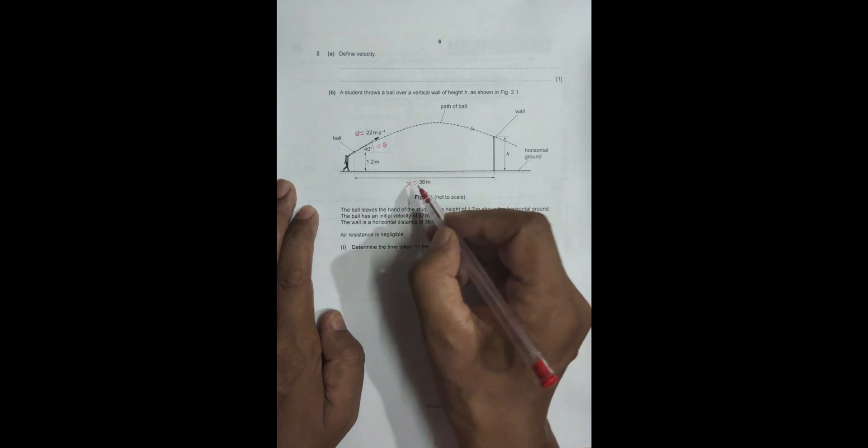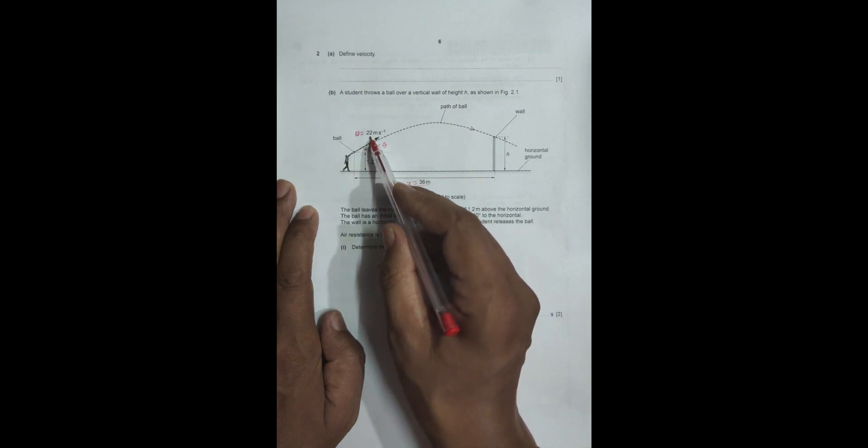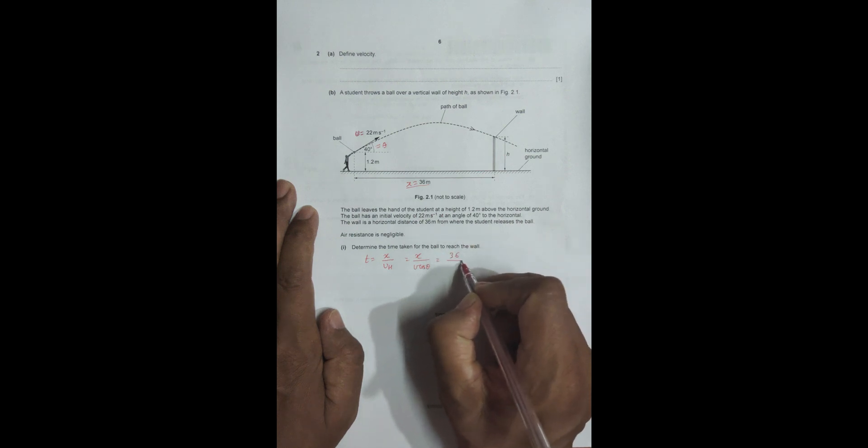Determine the time taken for the ball to reach the wall. We need to find the time taken here. We have the horizontal displacement and horizontal velocity, so time should equal horizontal displacement by horizontal velocity. Time equals X divided by u cos theta, that's equal to 36 divided by 22 into cos of 40 degrees.